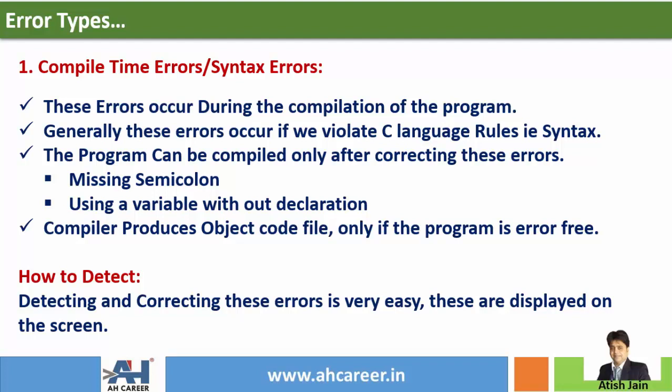The compiler produces an object code file only if the program is error-free. It means you can only create an object code once the errors are detected and corrected. Detecting and correcting these errors is very, very easy, because these are displayed on the screen and a relevant error message is also displayed. So now let's start with the compile time error demo.